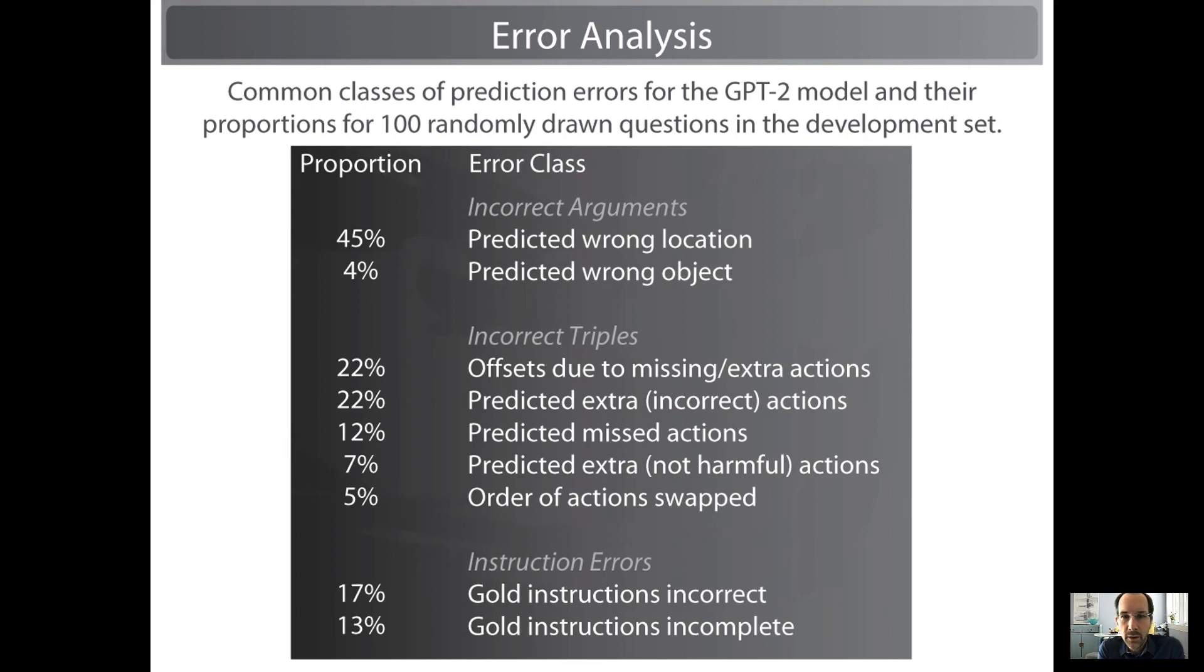In terms of an error analysis, this table shows the proportions of a handful of common error classes for 100 randomly selected predictions that didn't quite match the gold case. We see a few interesting things. One, nearly half of cases are wrong because they're predicting an incorrect location. That, of course, is not at all surprising. The model has no visual input. But the flip side is that in only 4% of cases does it predict the wrong object to interact with. So it generally knows what objects it needs to perform the task and how to use them. It just doesn't know where they are in the environment. And presumably that could be remedied by incorporating that information into a slightly more complex model.